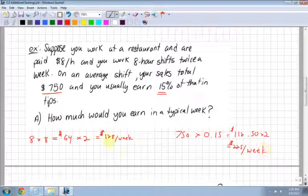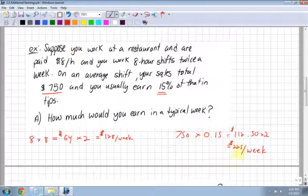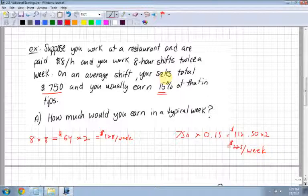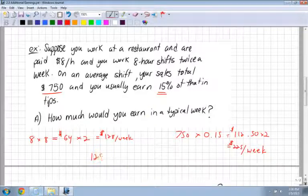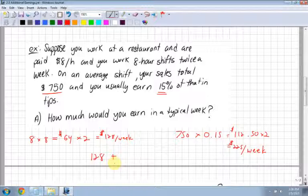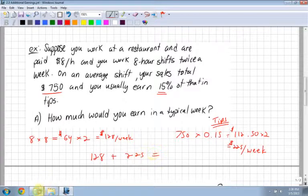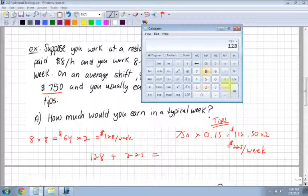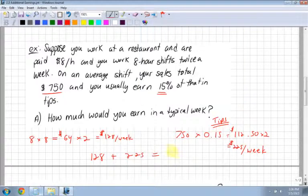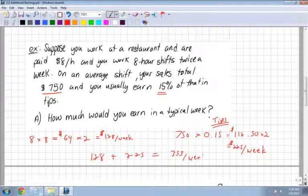In addition to the $128 a week wage, you're also making $225 a week in tips because your sales are quite a lot. How much would you make in a typical week? $128 regular wage plus $225 tips equals $353 per week total.